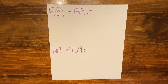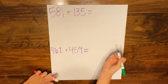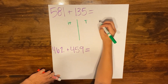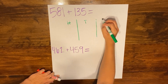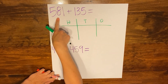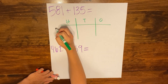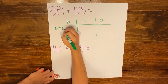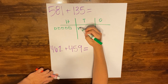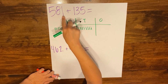I'm going to add those together using the same strategy of drawing base 10 blocks. I'll draw my place value chart with hundreds, tens, and ones, and start by drawing out my first addend, 581: five hundreds, eight tens, and one one.